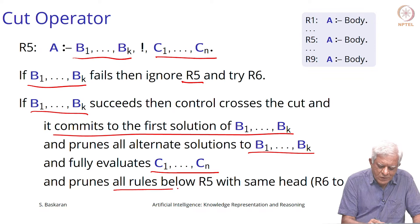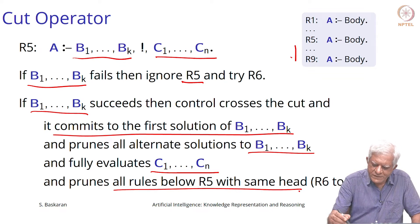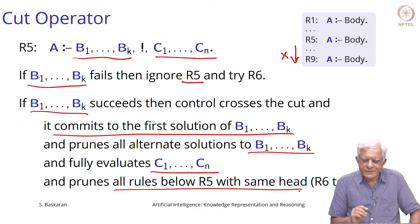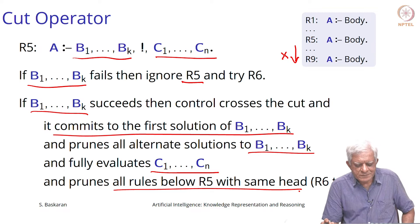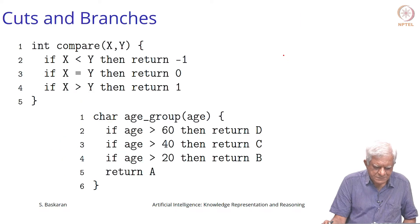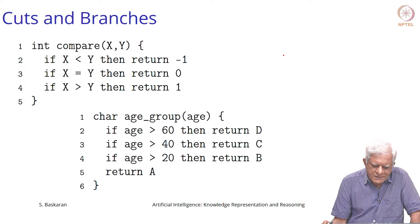And it prunes all the rules below r5 with the same head. That means anything which is below r5, those rules are also pruned — you cannot look at them. So let us look at a couple of examples of how cut can be used. Here is some program without cut.